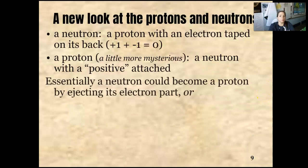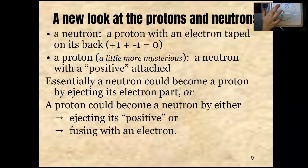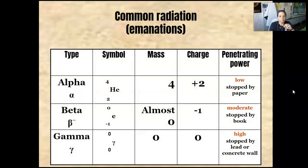Here's a new look at protons and neutrons. A neutron is a proton with an electron taped to it on its back. A proton, it's a little bit more mysterious, is a neutron with a positive attached. Essentially, a neutron could become a proton by ejecting that electron part, or a proton could become a neutron by either ejecting its positive or fusing with an electron. I know that's a lot, right? It's okay. We can get this.